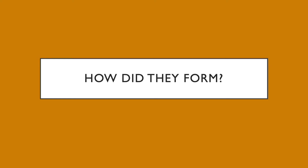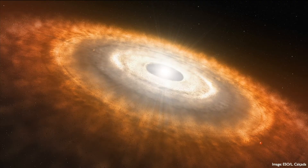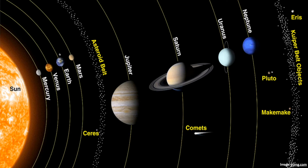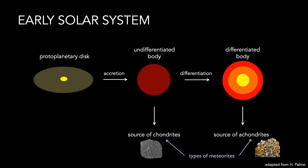How do these meteorites form? After the Sun formed about 4.6 billion years ago, it left behind a disk of hot gas and dust called the protoplanetary disk. The protoplanetary disk eventually evolved to form the planets and asteroids we see today. Meteorites are samples of these different solar system objects. As the disk began to cool, material condensed and accreted to form undifferentiated planetesimals, and eventually differentiated bodies like the planets we know today.